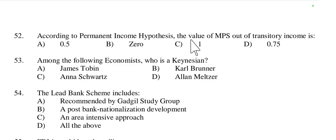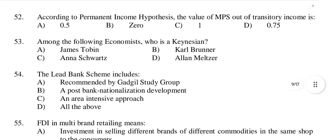Question 52: According to the Permanent Income Hypothesis, what is the value of MPS out of transitory income? In Permanent Income Hypothesis, individuals base their consumption decisions on their expected long-term average income rather than current income. As a result, they do not save or spend transitory or temporary one-time income because it does not affect their permanent income level. Therefore, the marginal propensity to save out of transitory income is zero. Option B is right.